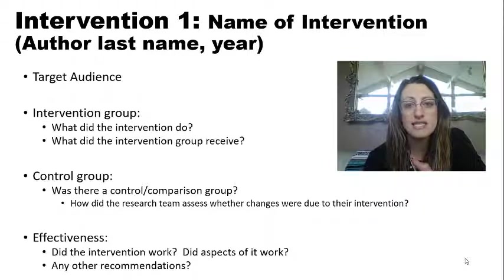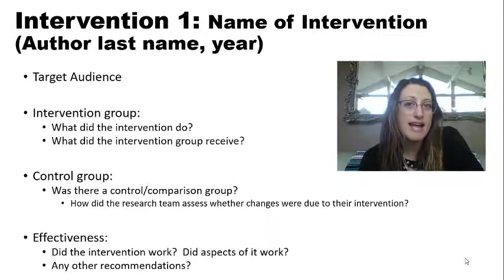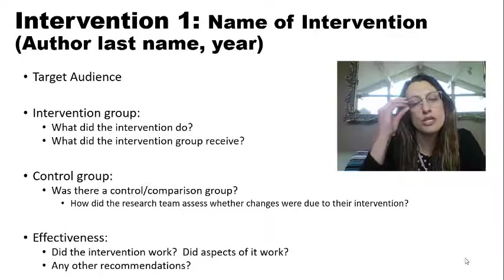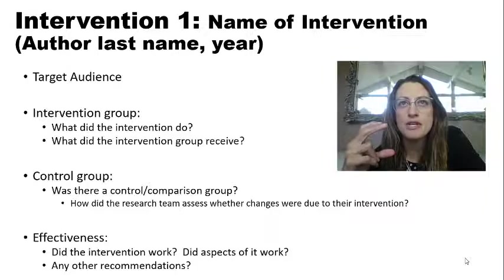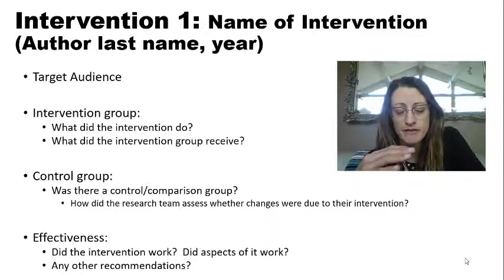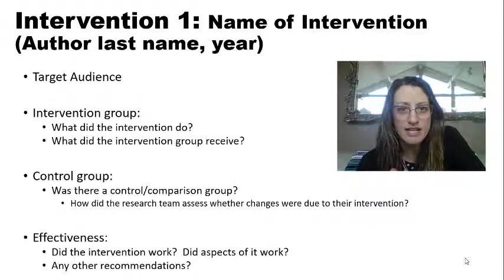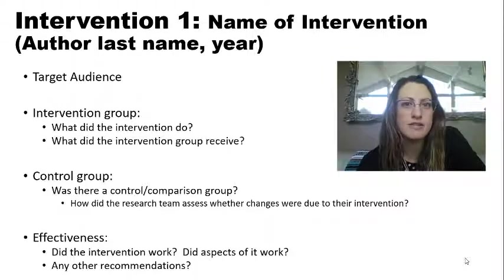Then look at whether the intervention, or aspects of it, were successful. You can find that in both the results section and the discussion section of the article. Under the methods, look for an intervention description. Results will give you numeric or qualitative data — narrative responses, interviews, focus groups — showing whether the intervention worked, or if it was feasible or acceptable.